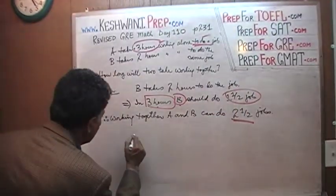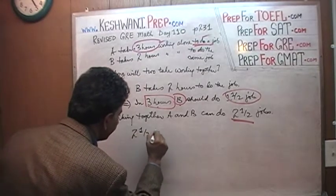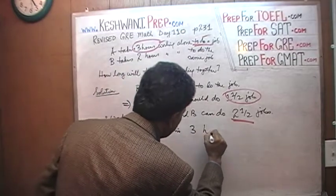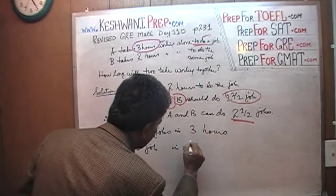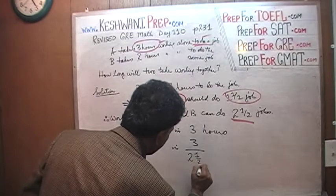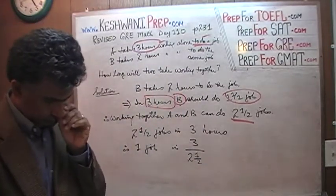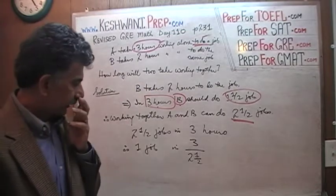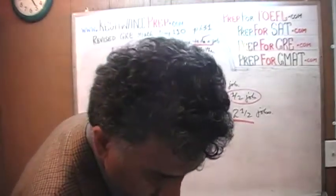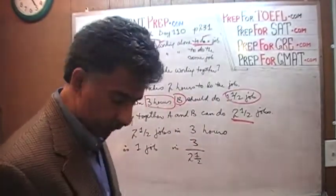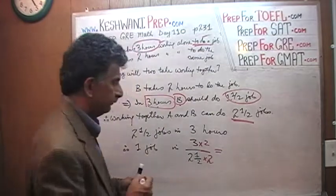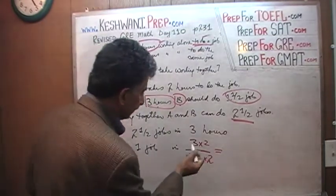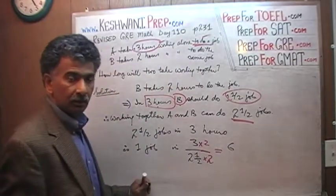We are almost there. We have two and a half jobs in three hours. Therefore, we can do one job in three divided by two and a half. To get rid of the two and a half from the bottom and make it a whole number, take the top and bottom and multiply both by two.